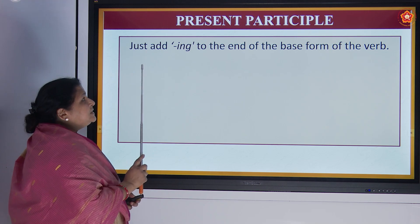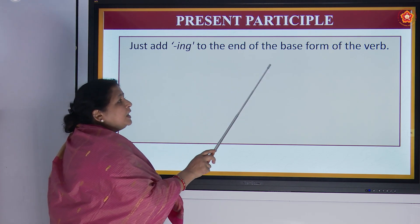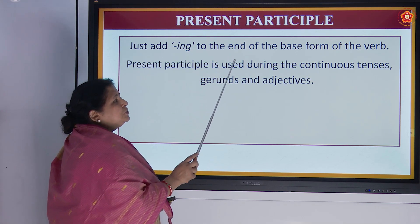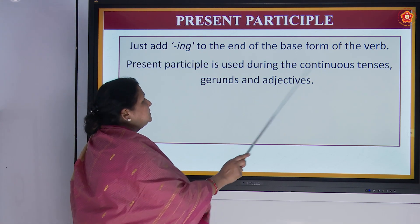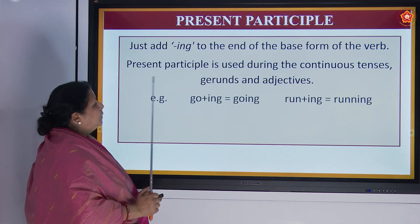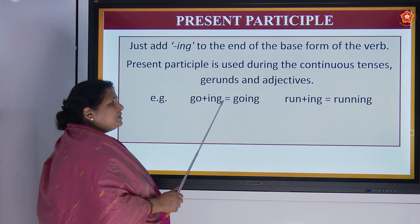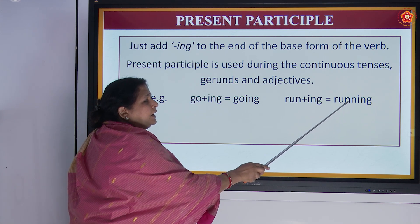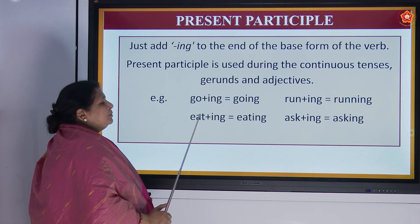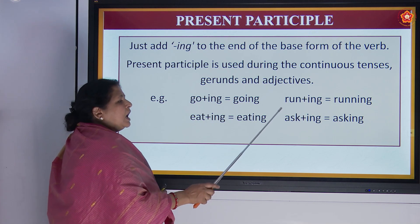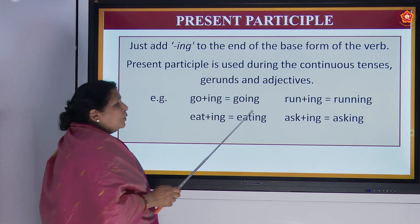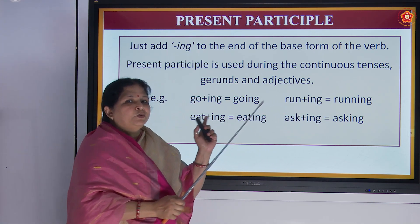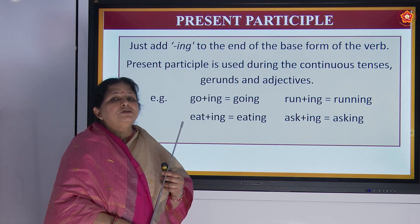Present participle — just add 'ing' to the end of the base form of the verb. Present participle is used during the continuous tenses, gerunds and adjectives. Examples: go + ing = going; run + ing = running (note the double 'n'); eat + ing = eating; ask + ing = asking. If you have a doubt about why we added two n's, refer to our previous classes where all the rules are given.